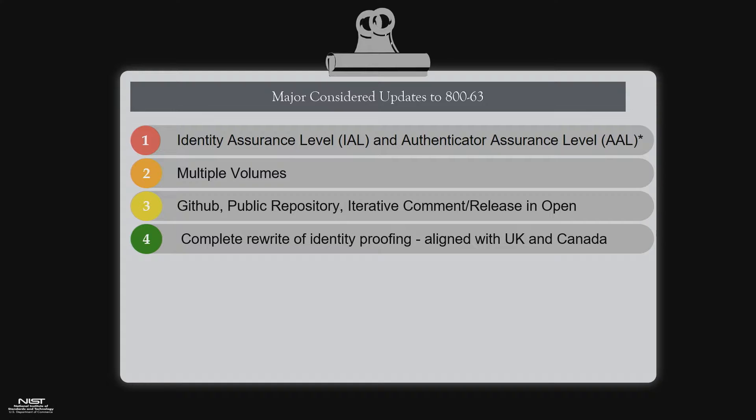We're rewriting identity proofing, aligned with the UK and Canada. Remote identity proofing has failed us. Knowledge-based authentication, which is what most remote proofing is based on, has failed us. The fact that all of our data is in the wild — why are we still proofing that way? This rewrite will set the record straight on what can be done with KBA and what cannot, and allows for significantly more innovation as it relates to remote identity proofing.